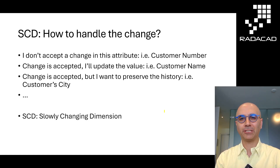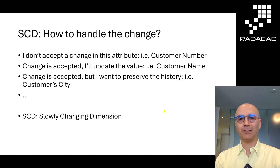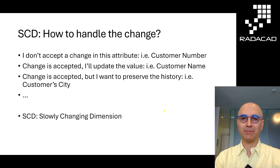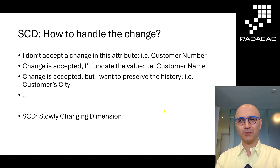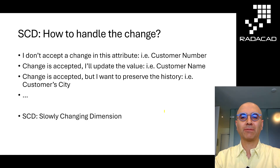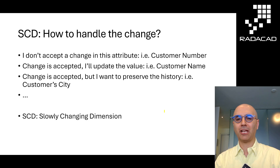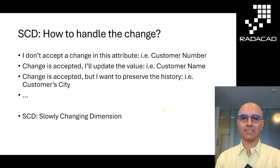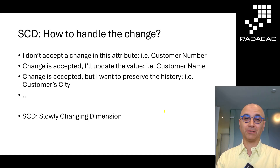SCD basically stands for slowly changing dimension — a value of a dimension member (member basically means a row in a dimension) in an attribute (attribute basically means a column in a dimension) changes over time and then you take different actions. Sometimes you may say you don't really accept the change, such as with a customer number — you expect this to be always unique, always the same thing. If there's a change, there's a problem in the source system.